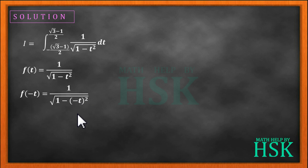Which on simplifying gives 1 by square root of 1 minus t square. So we get f of t as equal to f of minus t, therefore f is an even function.